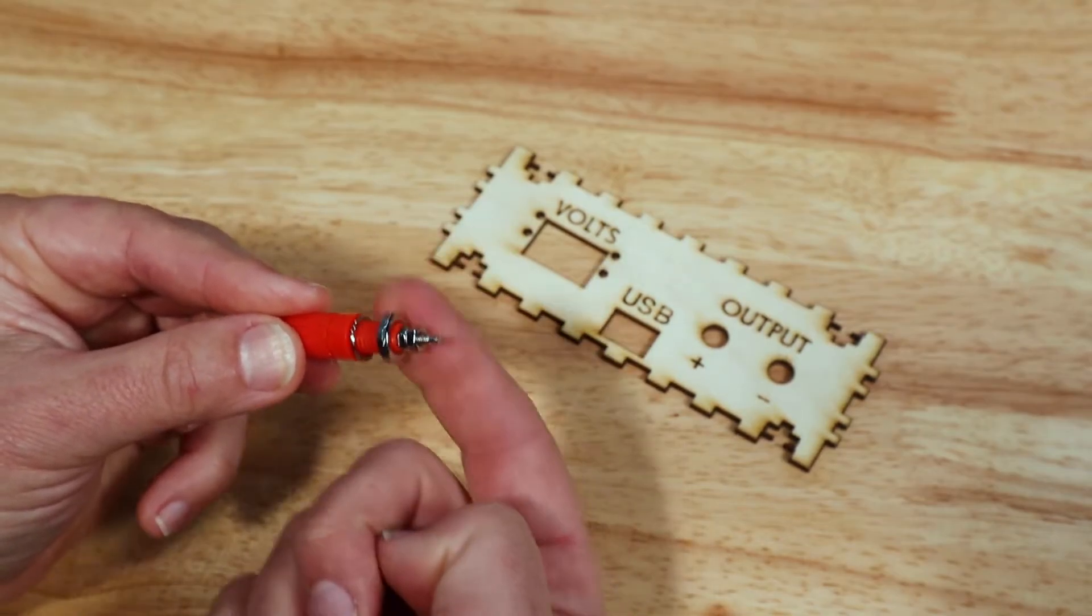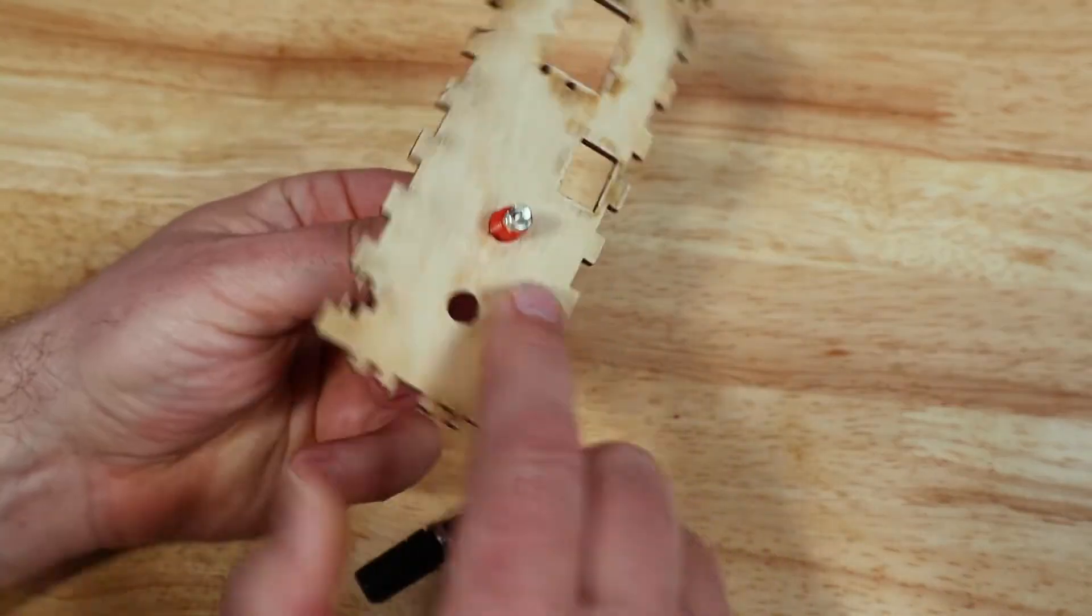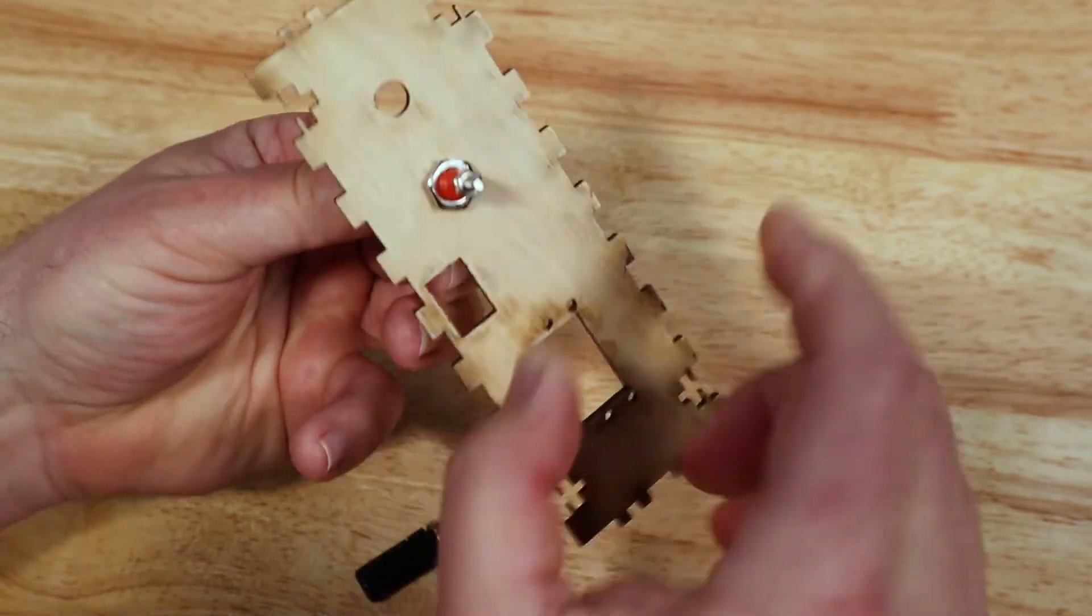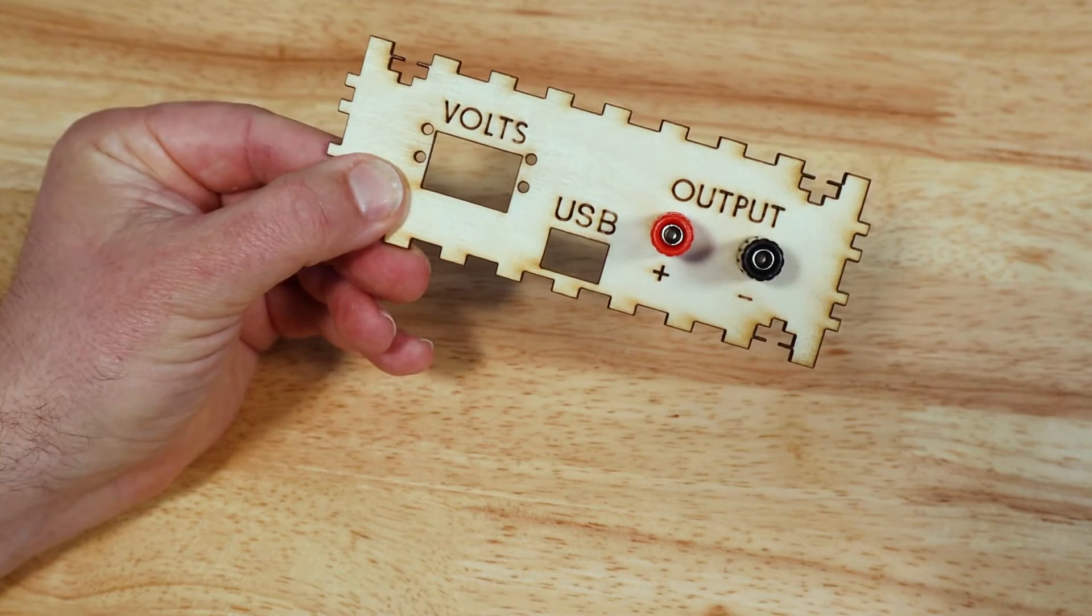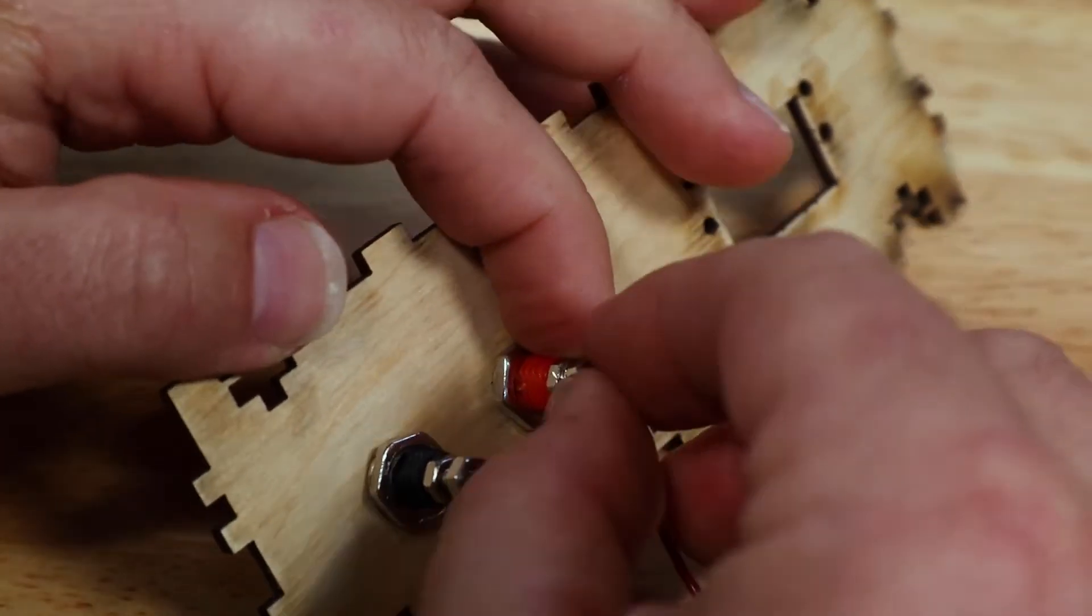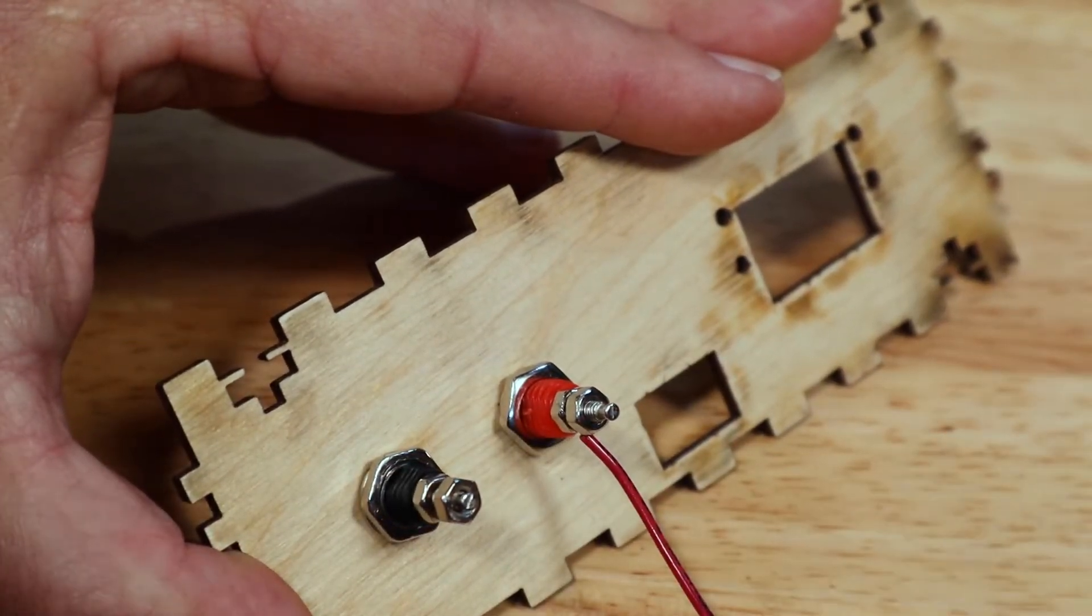Remove the nut and lock washer on the banana sockets. Mount the banana sockets into the wood faceplate and install the washer and nut. Make sure to put the red one in the hole marked positive and the black in the negative. We'll attach the stripped wires to the banana sockets by twisting the matching wire around the post and tightening the small end nut.